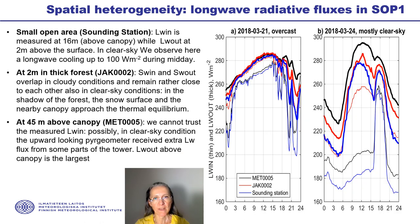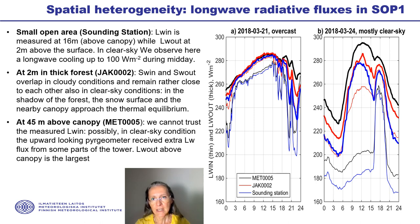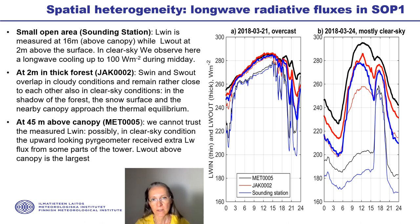The incoming and outgoing longwave fluxes were measured only at the radiation station, the blue line; in the forest, the red lines; and above the canopy, the black lines. Again, on the left is the overcast case and on the right, the clear sky case. Longwave incoming radiation was much smaller in the open area than in the forest, both in overcast and clear sky conditions. In clear sky, the cooling in the opening was very strong compared to the forest, where the surface was closer to thermal equilibrium with the surrounding forest.